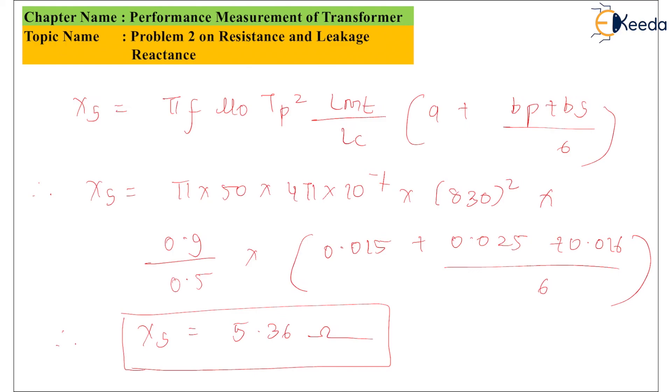In this way we have solved the problem and found the value of XP, that is the leakage reactance referred to the primary side, and XS, that is the leakage reactance referred to the secondary side.